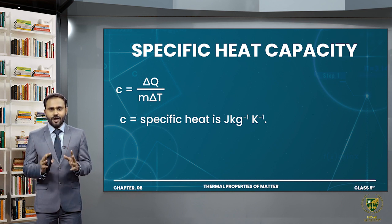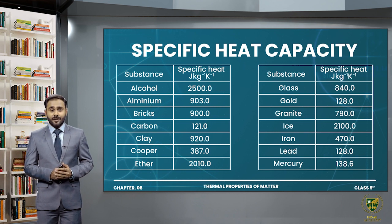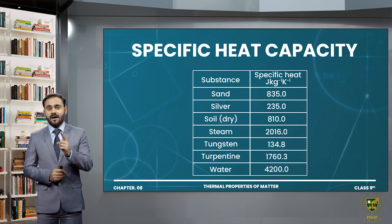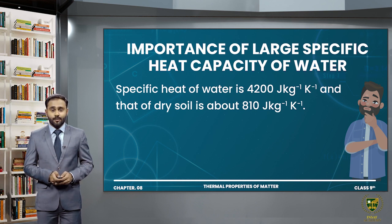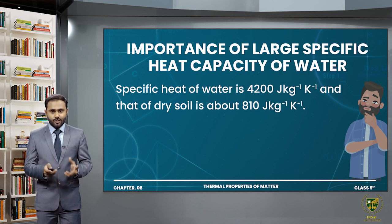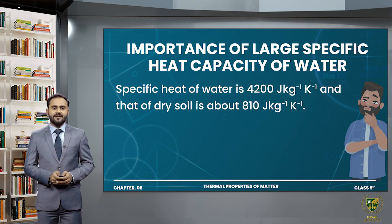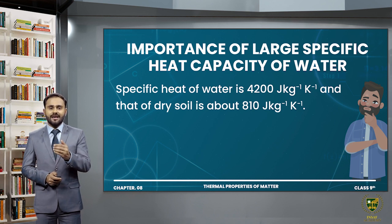So I hope is lecture mein aapko ye concept clear ho gaya hoga ke specific heat capacity kya hoti hai. Ab isi ke saath, book mein side table par aapko kuch substances ki specific heat capacity ki values bata di gayi hain. Yahan par kuch important values ko hum discuss karte hain. Water ki specific heat capacity hoti hai 4200 joule per kilogram per Kelvin — that means ke agar mere paas 1 kilogram liquid maujood hai aur maine uska 1 Kelvin temperature increase karna hai, toh mujhe 4200 joule heat required hai. Is tarah se hum baat karte hain soil ki — soil ki specific heat capacity hoti hai 810 joule per kilogram per Kelvin — ke agar mere paas soil 1 kilogram hai, uska meine agar 1 Kelvin temperature rise karna hai, toh mujhe 810 joule heat required hai.